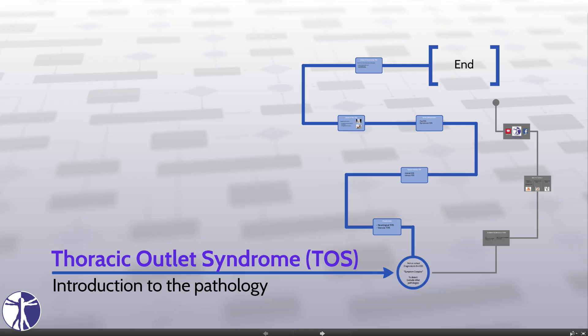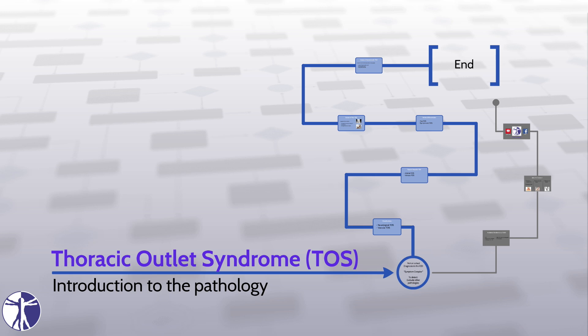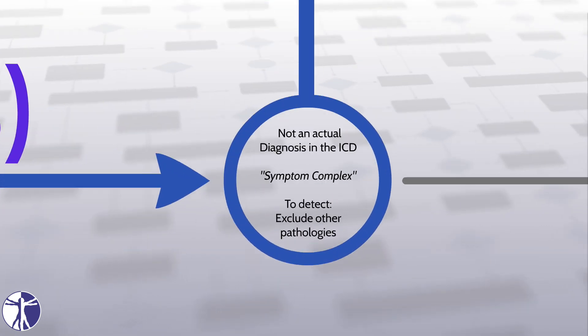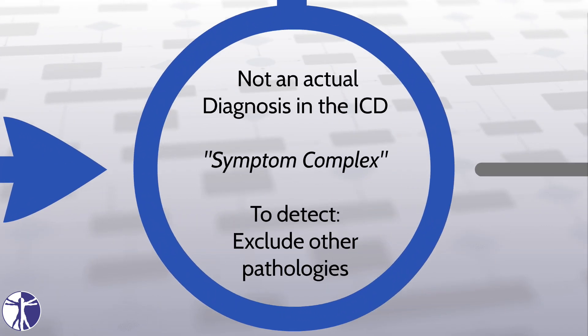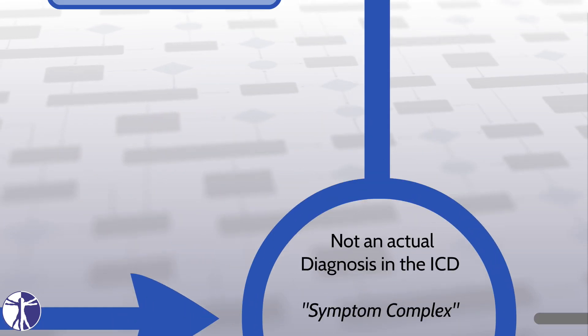Hi and welcome to Physiotutors. I'm Kai and in this video I would like to give you a short introduction to the condition known as thoracic outlet syndrome, which is abbreviated as TOS. TOS is not an actual diagnosis according to the ICD, but a symptom complex. Therefore, TOS is detected by the exclusion of other conditions that can provoke neurological or vascular arm symptoms.